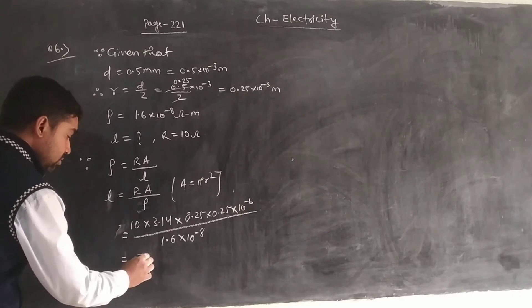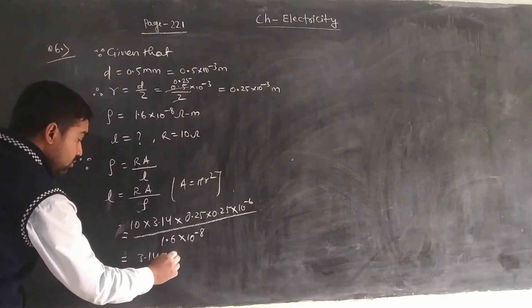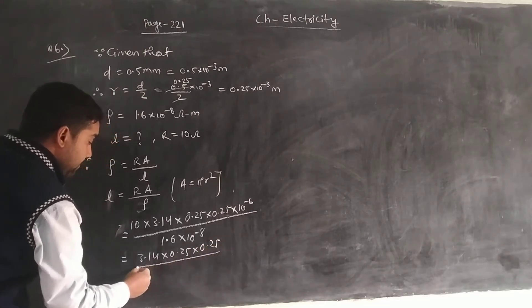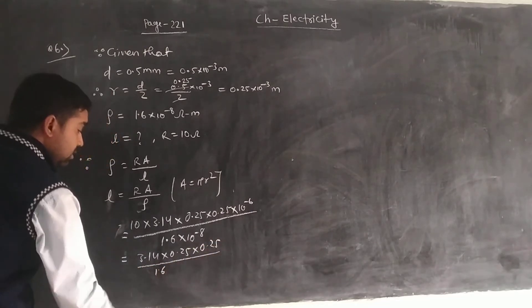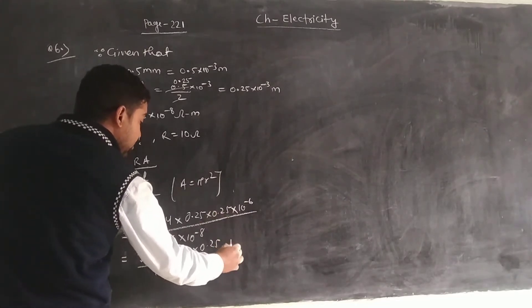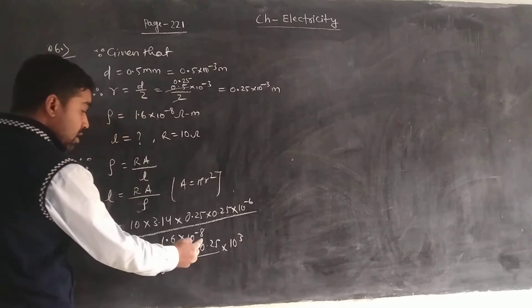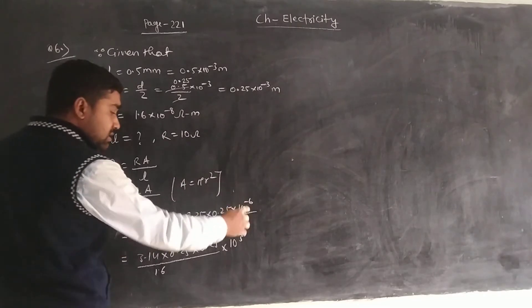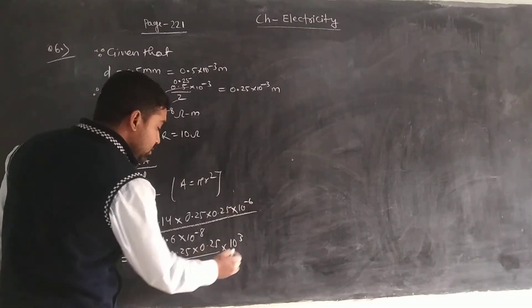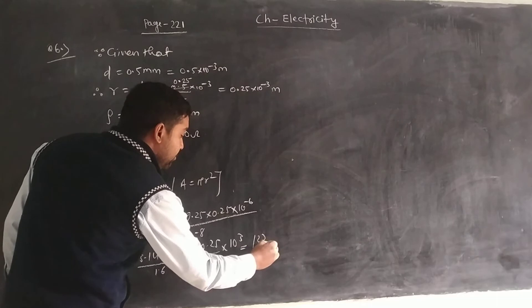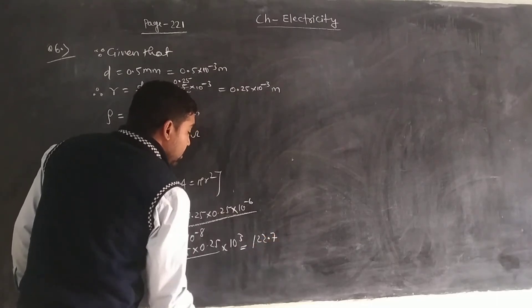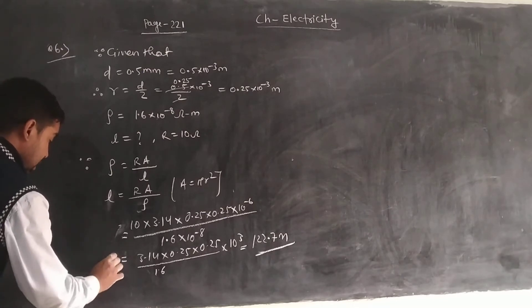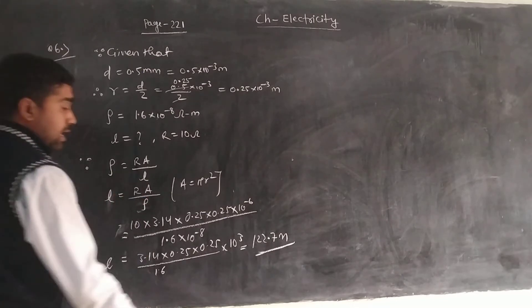So we have 3.14 into 0.25 into 0.25 divided by 1.6, and 10 to the power 3 positive remains. We will simplify this and get 1.227 meter as the length of the wire. This is the answer.